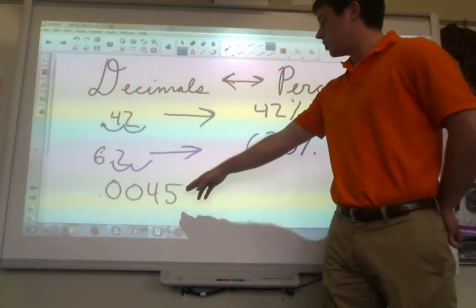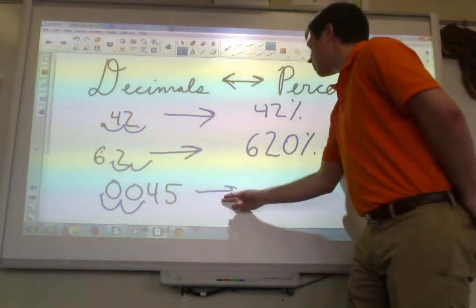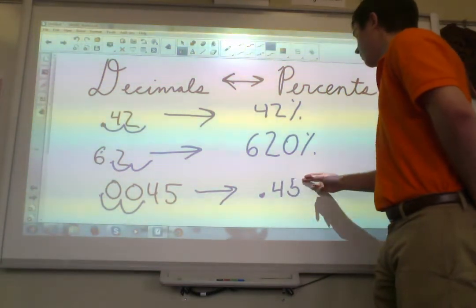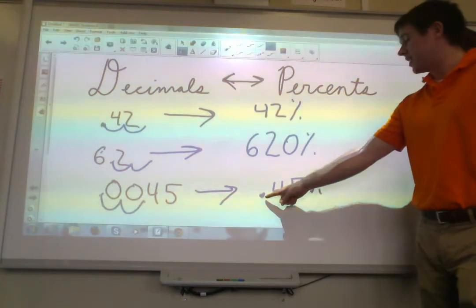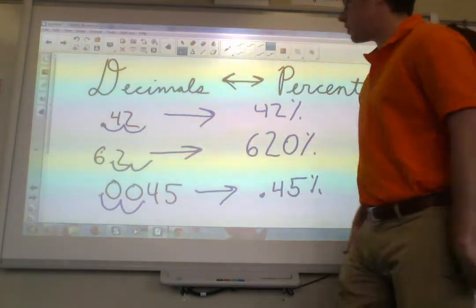And this example down at the bottom, 0.0045. Move that decimal twice, and we get 0.45%. That's totally fine. We can have a decimal inside of a percent. That's allowed. So very easy here.